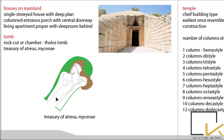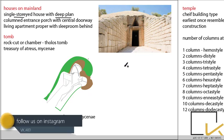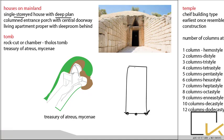Houses on the mainland were mostly single-storied with a deep plan — a lengthier columned entrance porch with a central doorway, leaving a living room with a sleeping room behind. For tombs, they were either rock-cut or chamber tombs. For example, the tholos tomb — the Treasury of Atreus at Mycenae — has a dome which is a rock-cut chamber.